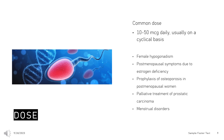Palliative treatment of prostatic carcinoma, Adult: 150–1,500 mcg daily. Menstrual Disorders, Adult: 20–50 mcg daily from day 5–25 of each cycle, given together with a progestogen added either throughout the cycle or from day 15–25.